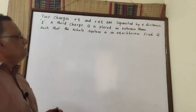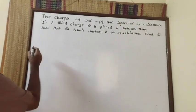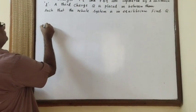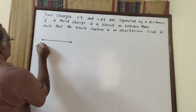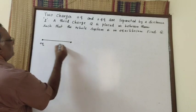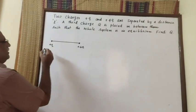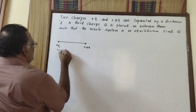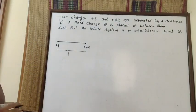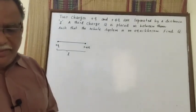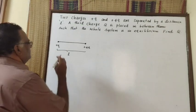So the question is this — how do we approach this? We will start to write the charges. This is plus Q and plus 4Q, and the distance between them is L.